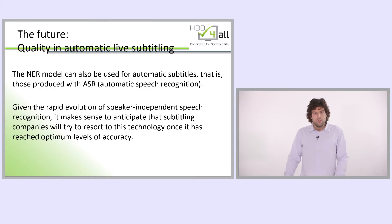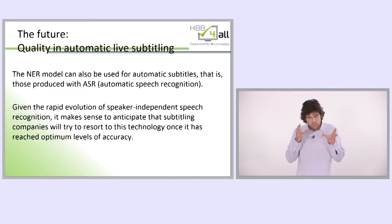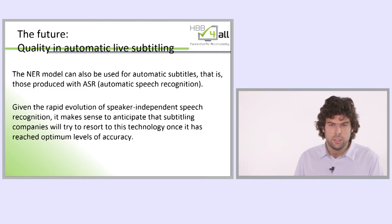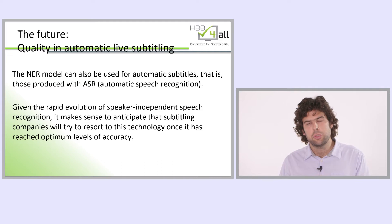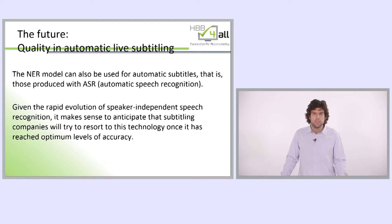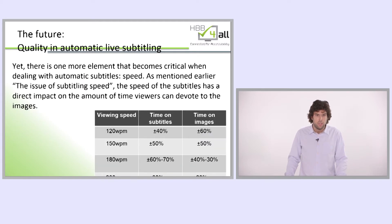Having explained the NER model — with the distinctions between addition errors and recognition errors, and within those types: serious, standard, and minor — we move to the last part of the presentation, which deals with the future of quality in live subtitling, specifically automatic live subtitling. The NER model can also be used for automatic subtitles, that is, those produced with automatic speech recognition without a respeaker in between. Given the rapid evolution of speaker-independent speech recognition, it makes sense to anticipate that subtitling companies will resort to this technology once it has reached an optimum level of accuracy. One critical element when dealing with automatic subtitles is speed.